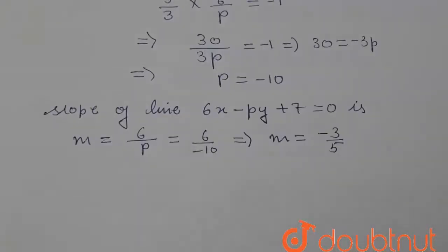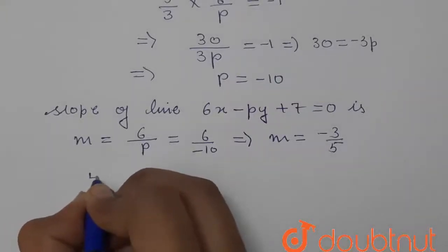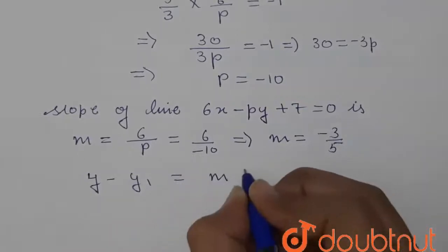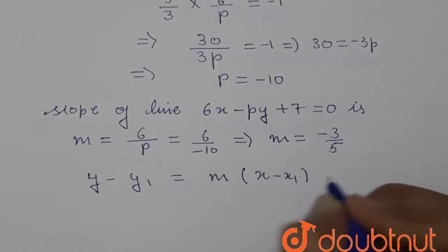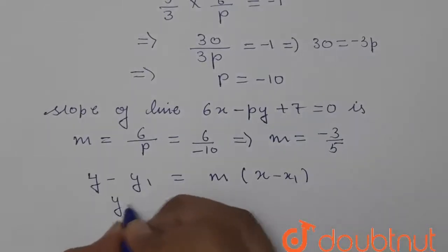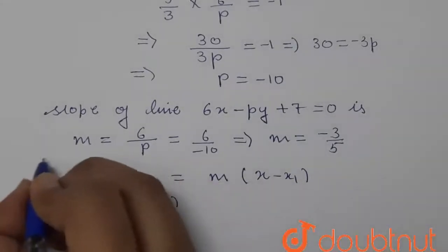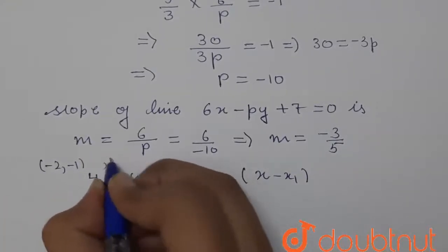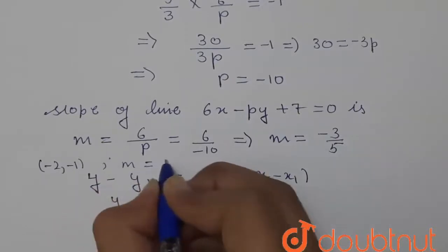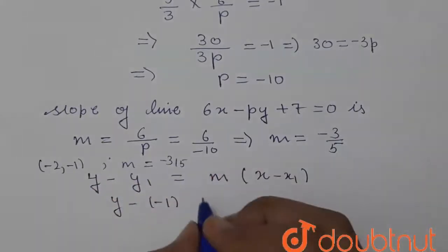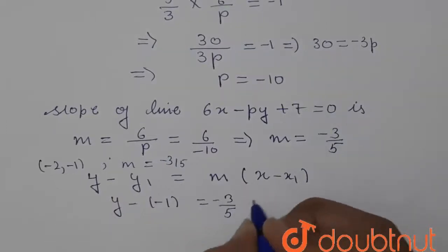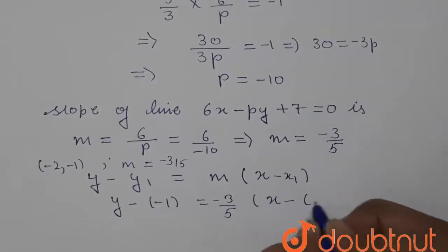Since the lines are parallel, the slopes are equal. Therefore, using the point-slope form y - y₁ = m(x - x₁), we can write y - (-1) = (-3/5)(x - (-2)), where the point is (-2, -1) and the slope m = -3/5.